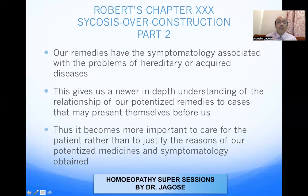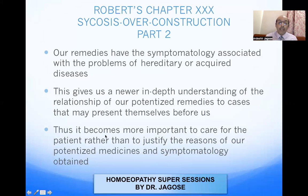Our remedies have symptomatology associated with hereditary and acquired diseases. This gives us a new, in-depth understanding of the relationship of our potentised remedies to cases that present before us. Robert emphasizes that it becomes more important to take care of the patient rather than to reason out how our medicines are potentised or what symptomatology they produce.